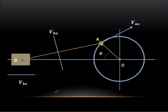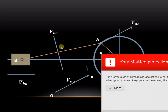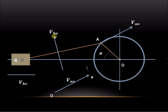Now we'll draw a line parallel to the velocity of A with respect to O vector to a certain scale. For the second vector — velocity of B with respect to A — since A is the known point, from A we draw a line parallel to this particular direction. For the third vector — velocity of B with respect to O — since O is the known point, from O we draw a line parallel to this vector.